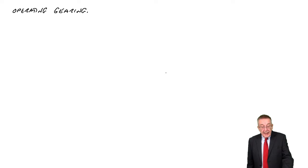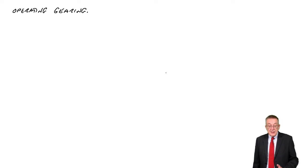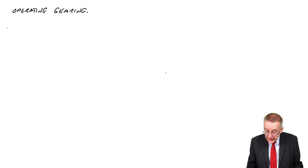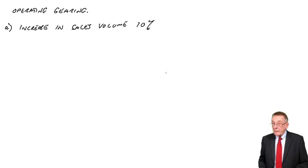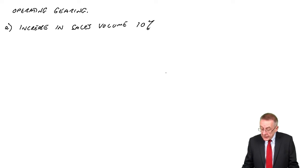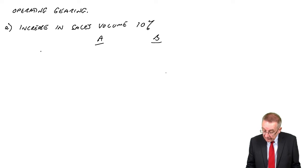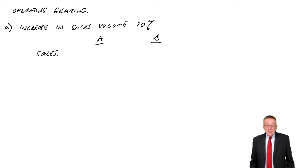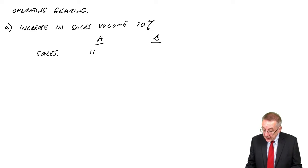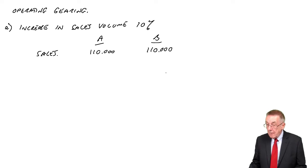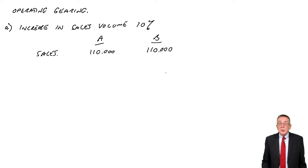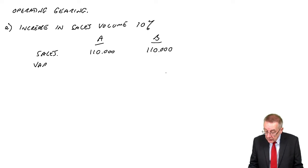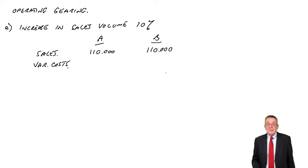The question asks us to calculate the percentage change in profits in both companies resulting from, first of all, an increase in sales volume of 10%. If next year the sales volume goes up by 10%, it's currently 100,000, so it'll go up to 110,000 in both cases. If the sales volume goes up, we sell more, we have to produce more, and if we produce more, the variable costs will go up as well — by 10% for the extra volume.